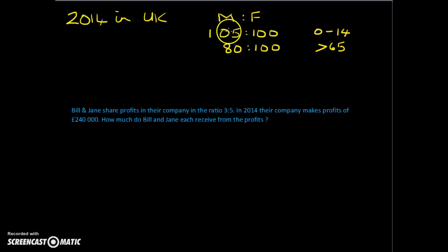At the top here, I've got the ratio of males to females in the UK in 2014. For people aged between 0 and 14, for every 100 females, there were 105 males.